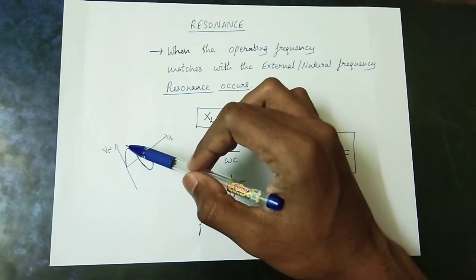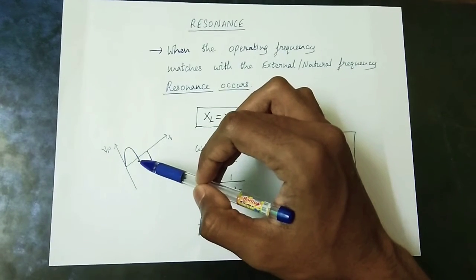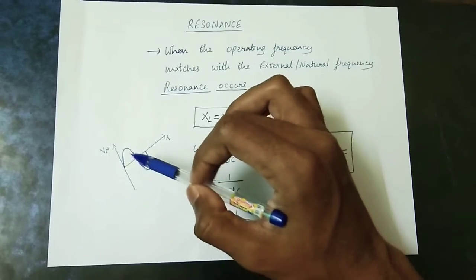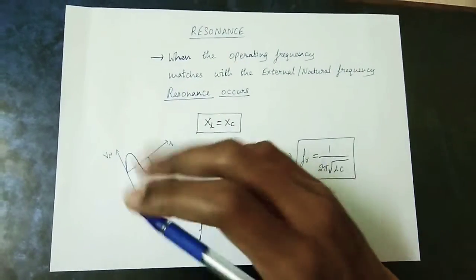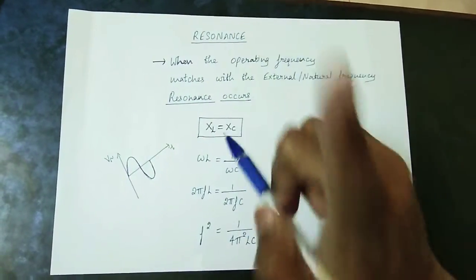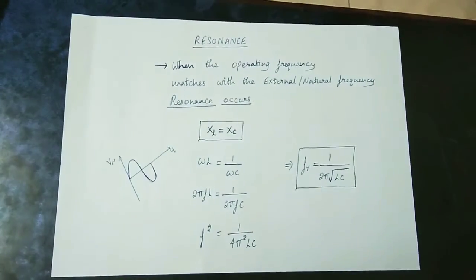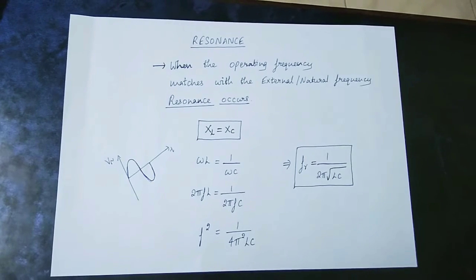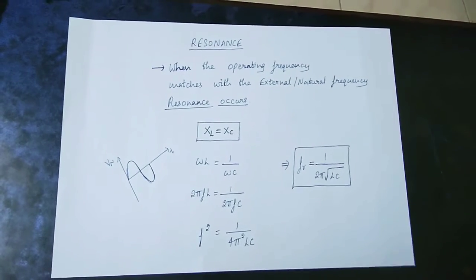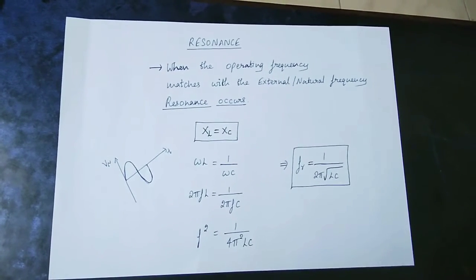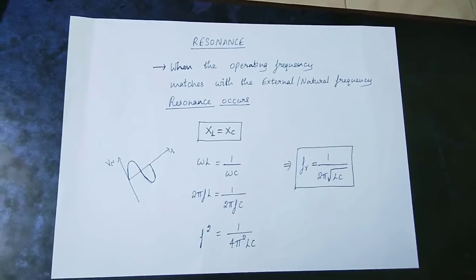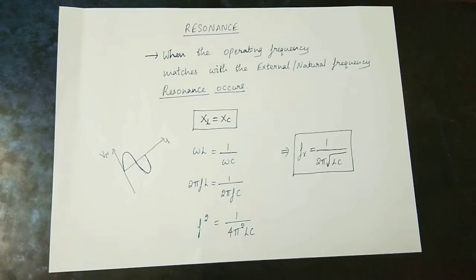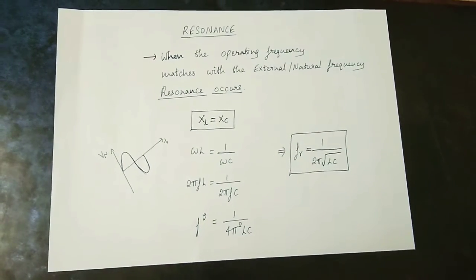Oscillation goes from 0 to maximum positive, decreases back to 0, then to negative maximum and back to 0 — this is one cycle. If we complete 50 cycles in a second, we call that frequency. 50 Hz is the frequency meaning. In the USA, the frequency is 60 Hz.